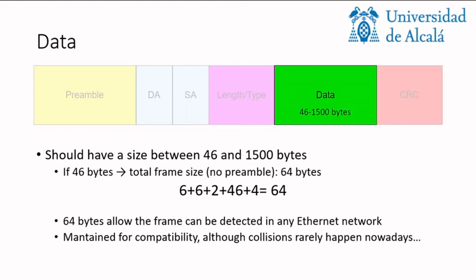Because if you remember, to access the media we need to detect the collision somehow. So if the frames are too small maybe it's very difficult to check if there has been a collision, particularly in the oldest networks. So 64 bytes allow the frame so that it can be detected in any Ethernet network. This is somehow maintained for compatibility although collisions rarely happen nowadays. We will see why with the switches in another video.